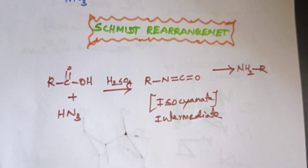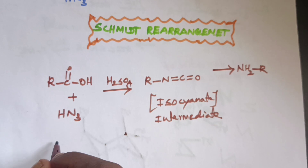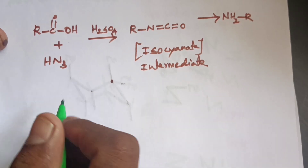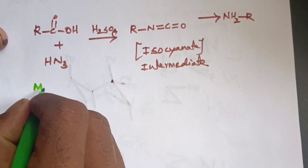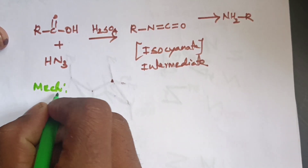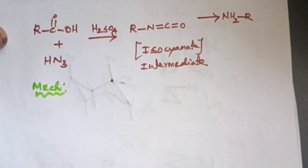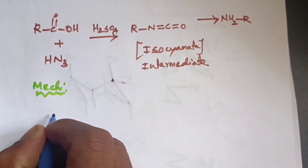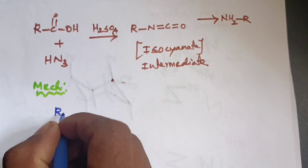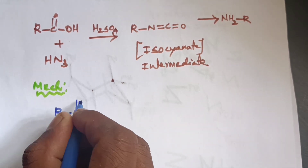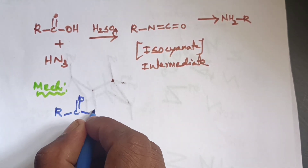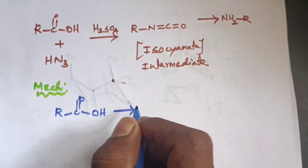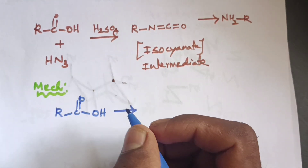Now we have the mechanism. First, the hydrazoic acid with carboxylic acid — the carboxylic acid is treated with H2SO4.